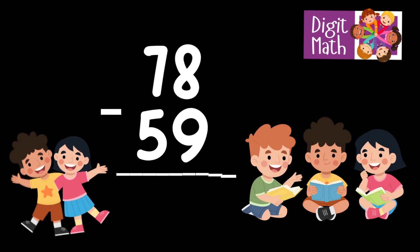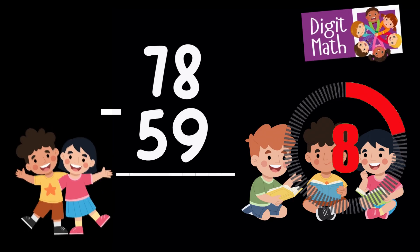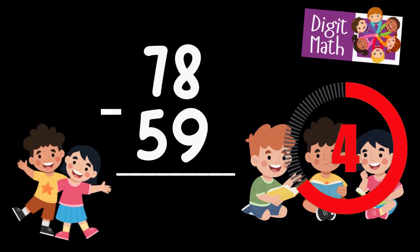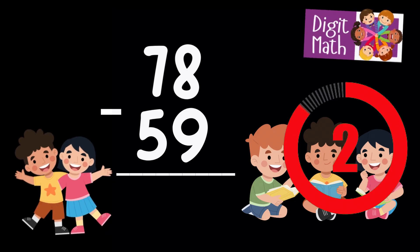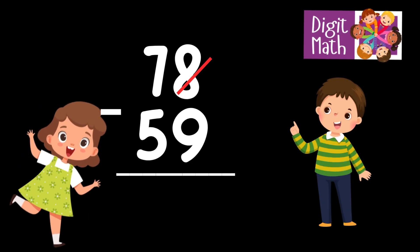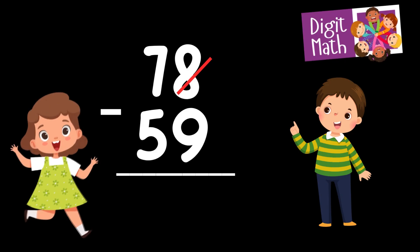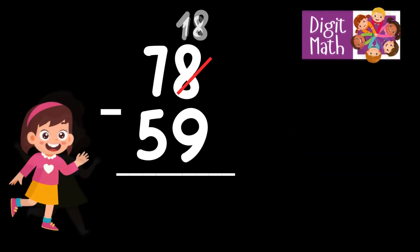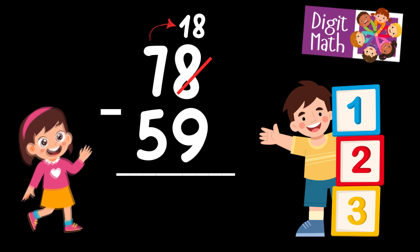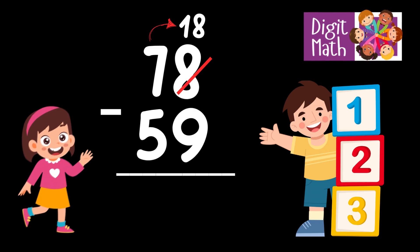78 minus 59 is... Time to think. In the Units column, we have 8 minus 9. Since it's not possible to subtract 9 from 8, we need to borrow from the Tens column. In the Tens column, we have 7. We take 1 from the Tens, leaving 6 in the Tens column and turning the Units column into 18.